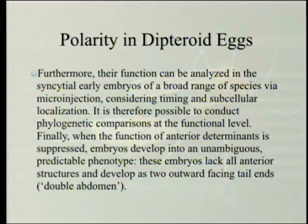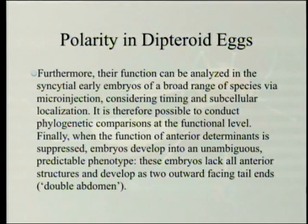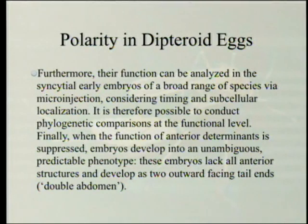When the function of anterior determinants is suppressed, embryos develop into an unambiguous, predictable phenotype: these embryos lack all anterior structures and develop as two outward-facing tail ends — a double abdomen. Sort of like some politicians, you know.